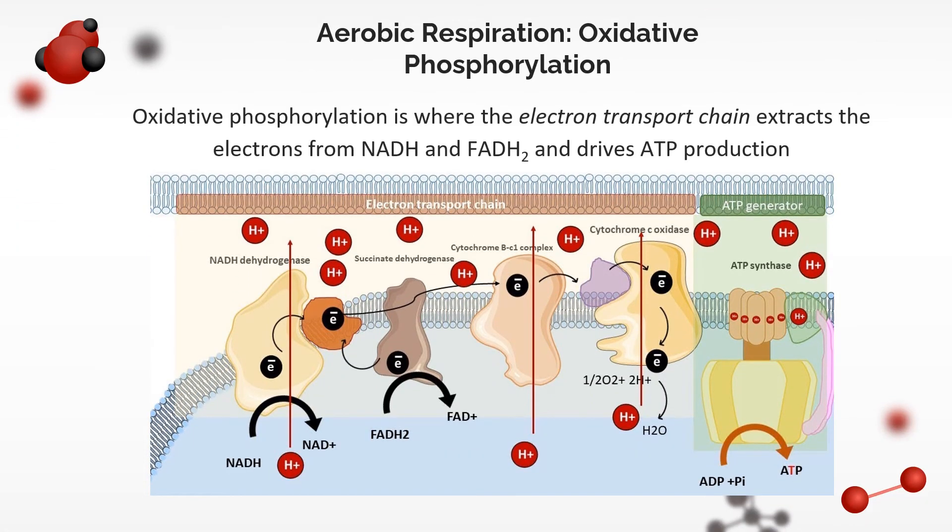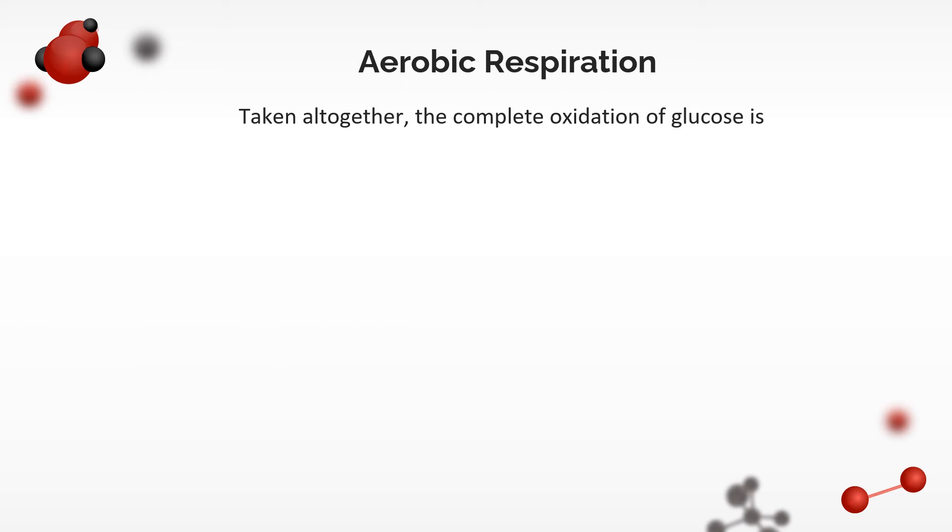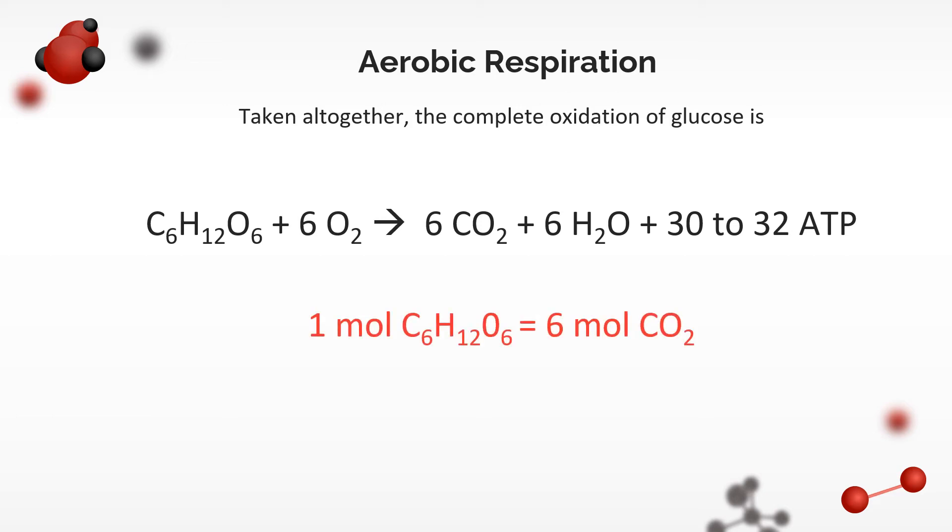In oxidative phosphorylation, the electron transport chain, which consists of membrane protein complexes, extracts the electrons from NADH and FADH2, and drives ATP production. As electrons are passed down the chain, protons are pumped from the matrix into the intermembrane space. The large proton gradient created then drives ATP production by ATP synthase. Ultimately, oxygen accepts the electrons from the fourth complex and gets reduced to water. Altogether, the complete oxidation of glucose is as follows: 1 glucose plus 6 oxygen into 6 carbon dioxide plus 6 water and 32 ATP. Note the stoichiometric equivalence of 1 mole of glucose is equivalent to 6 moles of carbon dioxide.